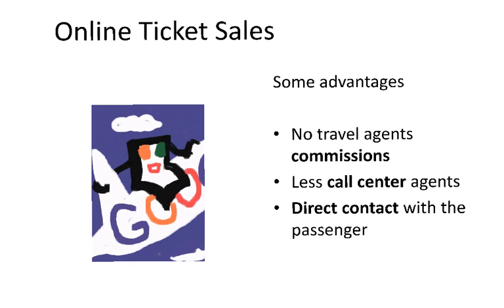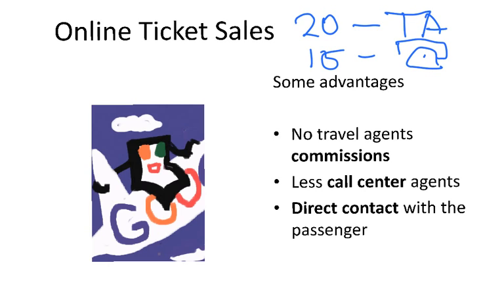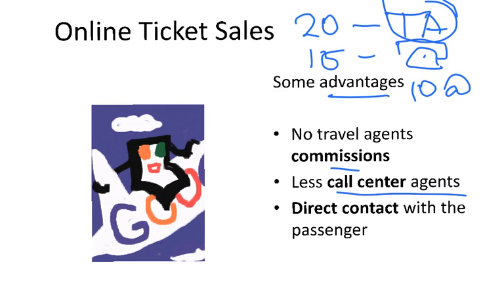Looking at the history of airline ticketing: 20 years ago, airlines sold most tickets through travel agencies. 15 years ago, they started selling by telephone. 10 years ago, online sales became increasingly common, and low-cost carriers were the first to sell most tickets online. The advantages include not paying travel agency commissions, needing fewer call center agents because passengers book themselves, and having direct contact with passengers.